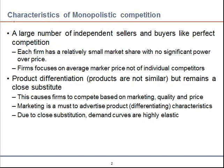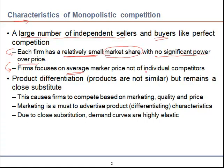First, understand the characteristics of monopolistic competition. There are a large number of independent sellers and buyers. As each firm is relatively small, each firm has a smaller market share, which results in no significant power over the price. Hence, firms focus on average market price and not on individual competitors. The second most important characteristic is product differentiation. As products are close substitutes, this differentiation gives some benefit to the seller. Firms compete based on marketing, quality, and price, and marketing is a must for better positioning of a firm's product.